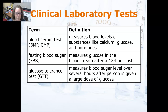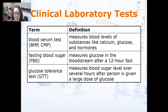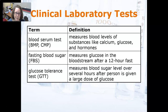You can do a blood serum test for a hormone, for example cortisol or insulin level. A Fasting Blood Sugar, or FBS, measures the glucose in the bloodstream after a 12-hour fast. This is a really good test to determine if a person has diabetes.